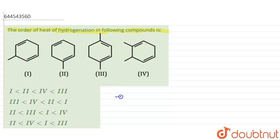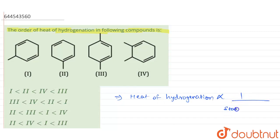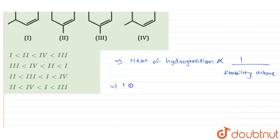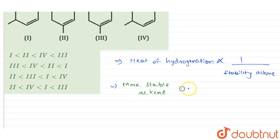The heat of hydrogenation will be dependent upon the stability of the alkene, and it has an inverse relationship with stability. This means that a more stable alkene will have less heat of hydrogenation, and conversely, a less stable alkene will have the most heat of hydrogenation.